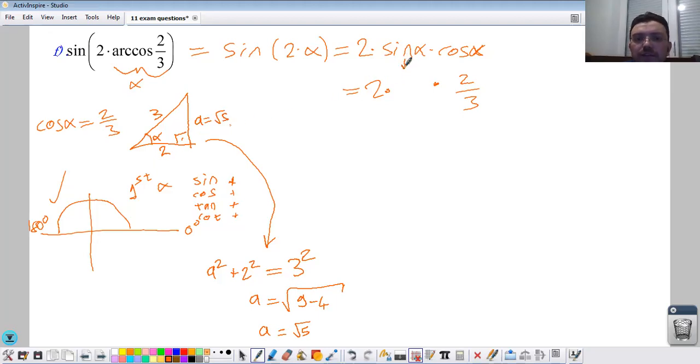Now I can write sine alpha from this triangle: opposite side square root 5 over hypotenuse which is 3. Then you just multiply them: 2 times 2 is 4, square root 5 over 9.